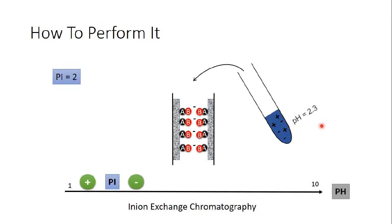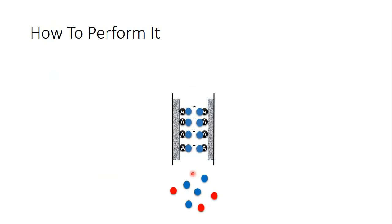When we apply the solution to the column, only my protein — which is negatively charged — exchanges with substance B and binds. The other proteins, which hold a positive charge, are washed out along with substance B, because my protein took substance B's place. Now my protein is stuck in the column.